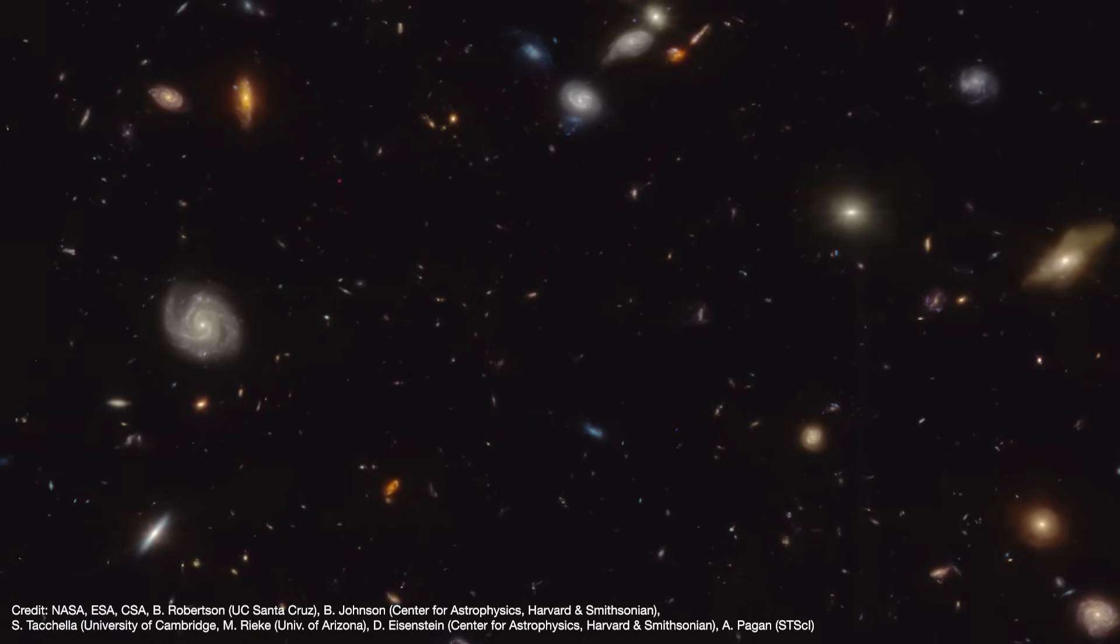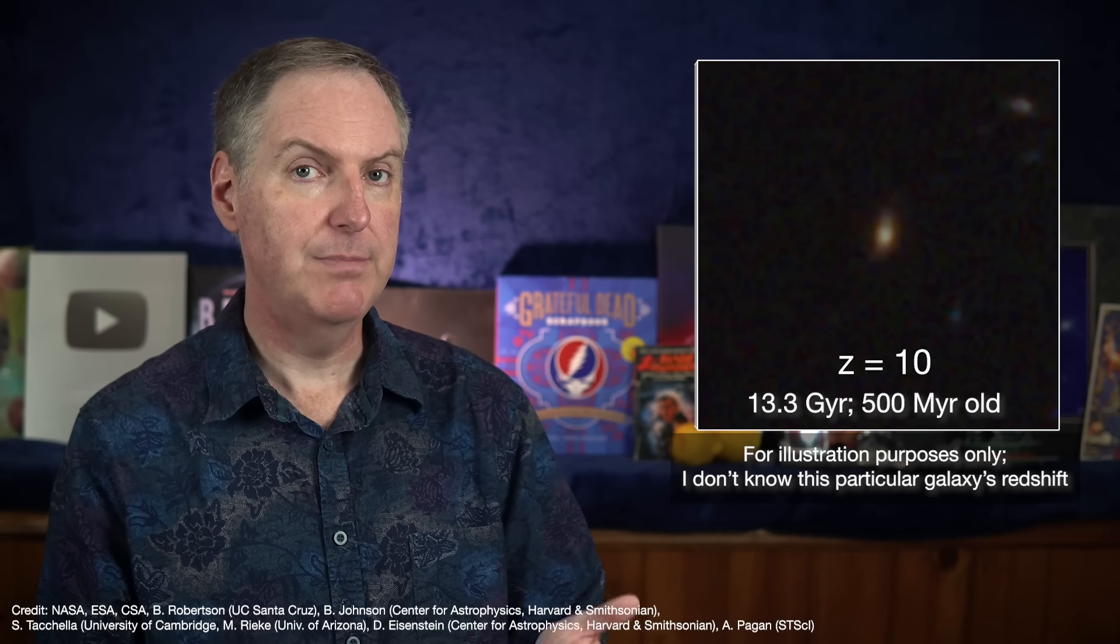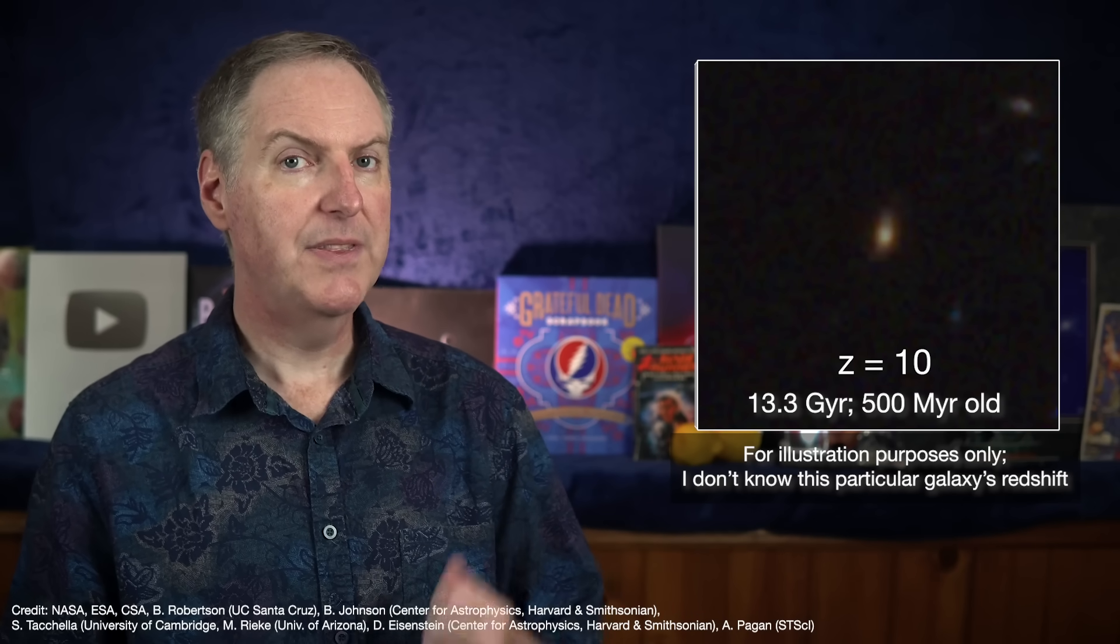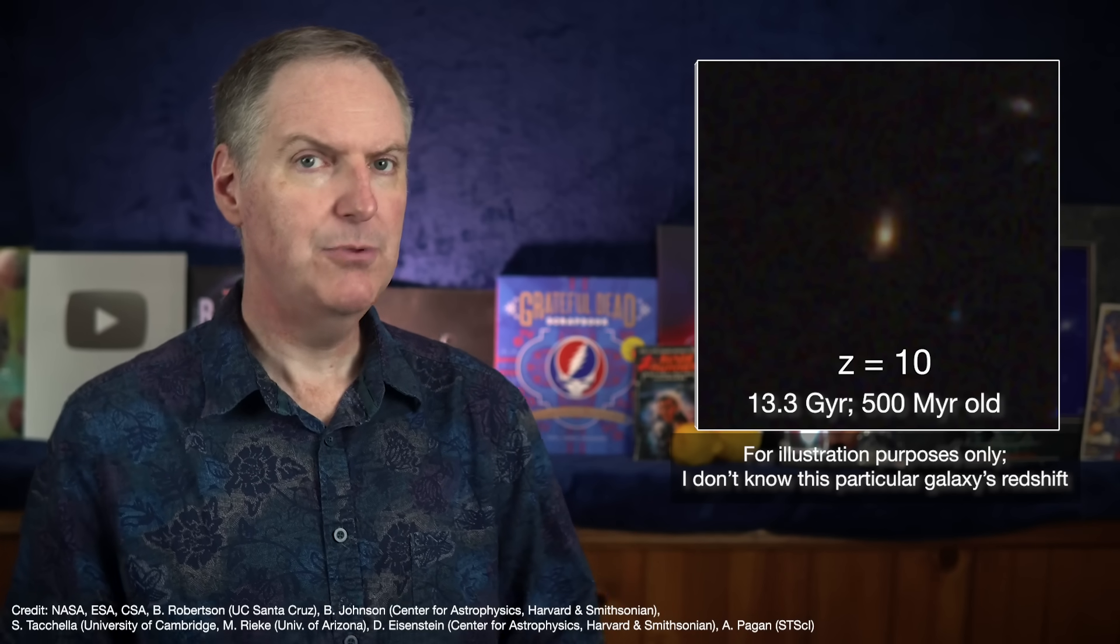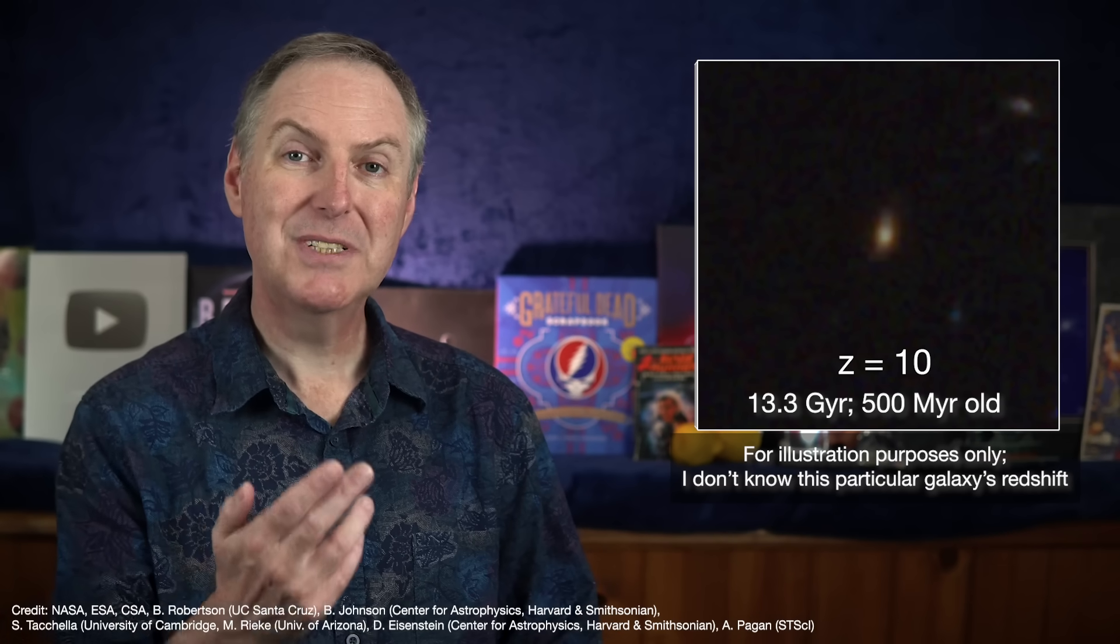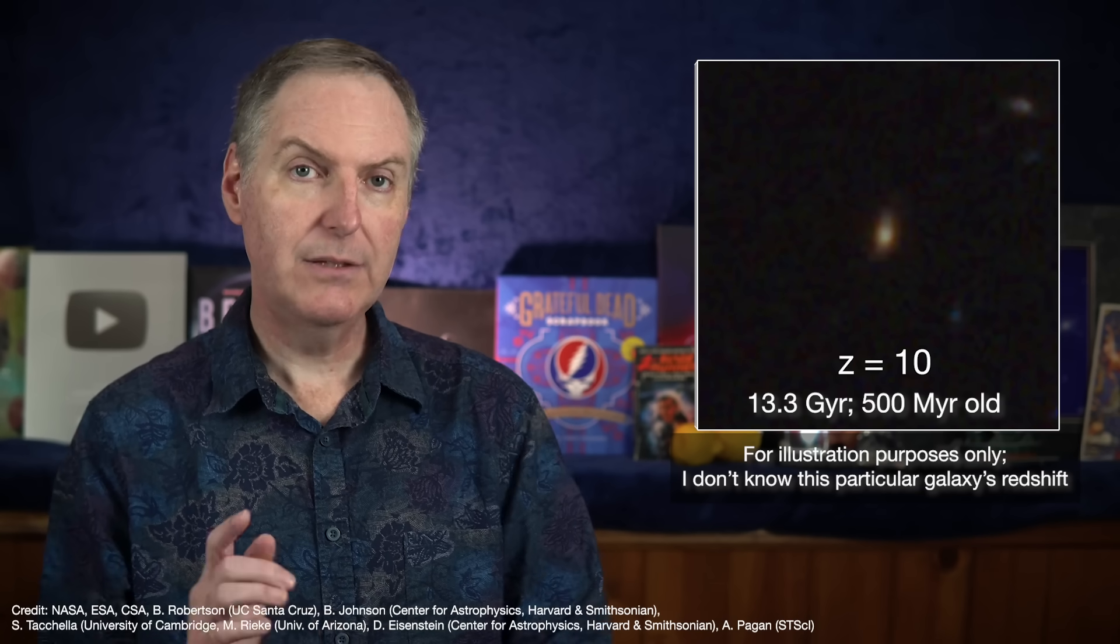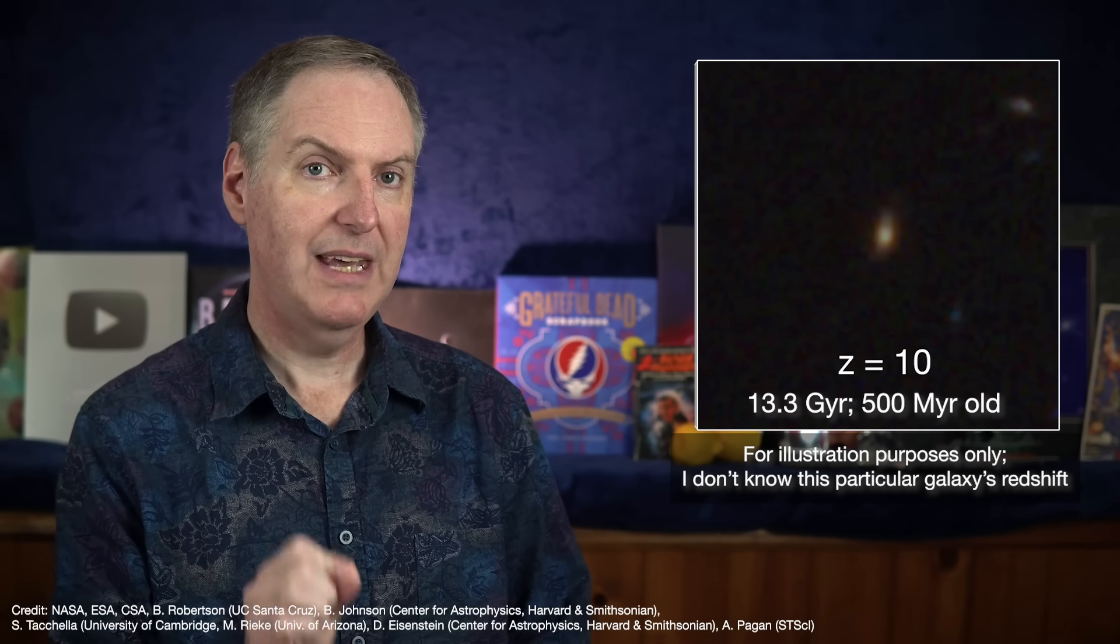For example, a galaxy with a redshift of 10 means we're seeing it 13.3 billion years ago. That means we're seeing the galaxy when the universe was just 500 million years old. But this particular galaxy appears to be too massive for a 500 million year old. To give the galaxy more time to come together, Gupta introduces a version of Lambda CDM that includes some critical modifications.